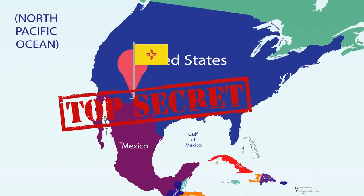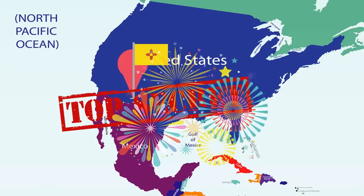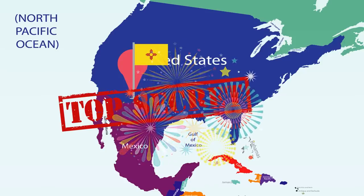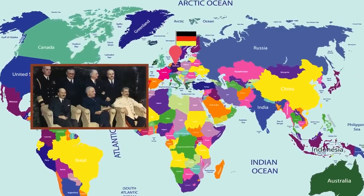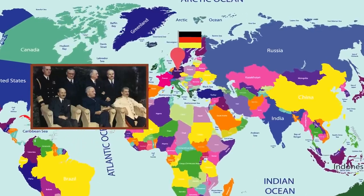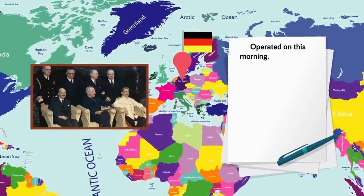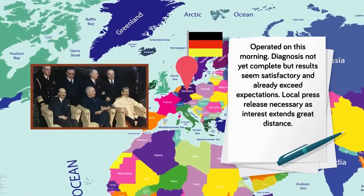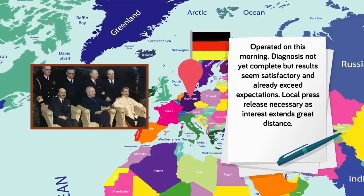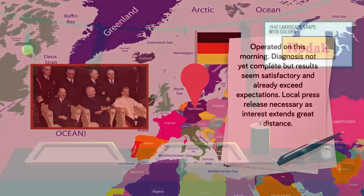15. The government covered up the Trinity test by telling civilians in the vicinity that what they had witnessed was just a depot full of explosives and pyrotechnics accidentally exploding. 14. The results of the Trinity test were relayed in code immediately to President Truman, who was at the Potsdam Conference in Germany, with the message reading, Operated on this morning, diagnosis not yet complete, but results seem satisfactory and already exceed expectations. Local press release necessary as interest extends great distance.